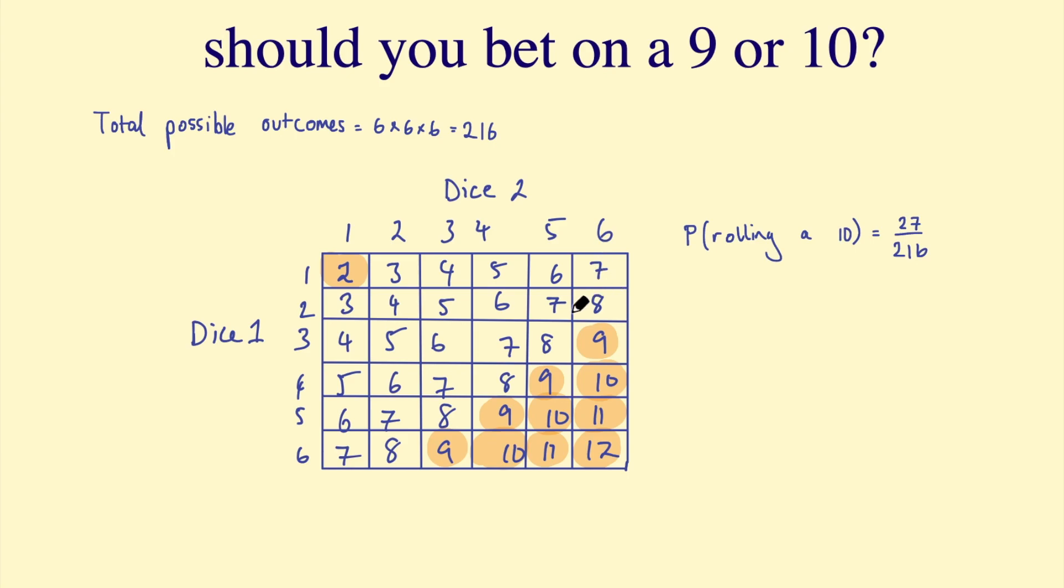So then, these are all the possibilities of rolling a 9. Count these up: 5 + 6 + 5 + 4 + 3 + 2. So count those up and we get a probability of rolling a 9, which is 25 out of the total possible outcomes, 25 out of 216. So we have answered the question. It is more likely to roll a 10. So you should bet on a 10 when rolling three dice.